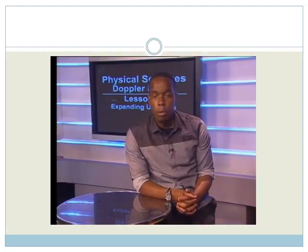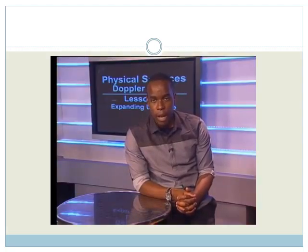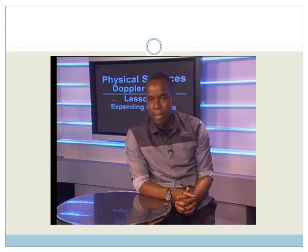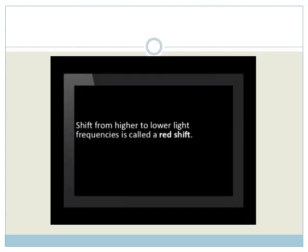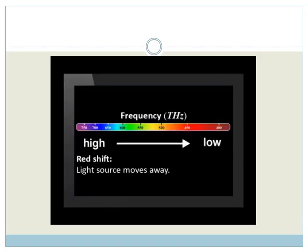When a light source moves away from an observer, the observed frequency of light is less than that emitted. Since in terms of light, a shift from higher to lower frequencies is towards the red part of the spectrum, this is called a redshift. Note that this spectrum has lower frequencies on the right-hand side, so the redshift is in the direction of the arrow.